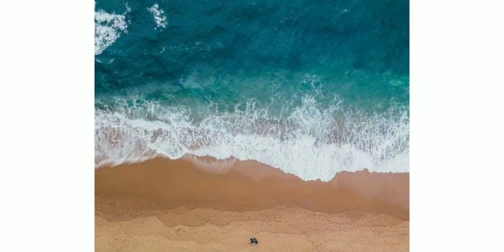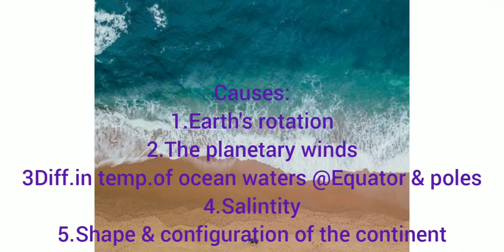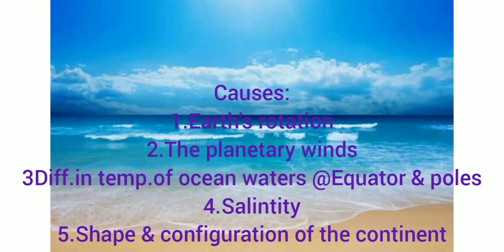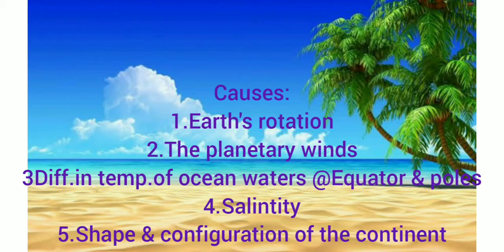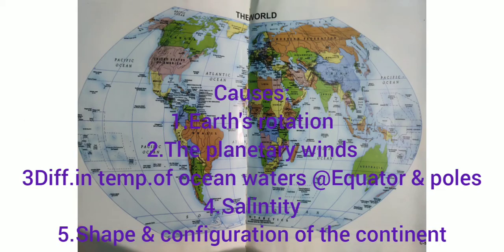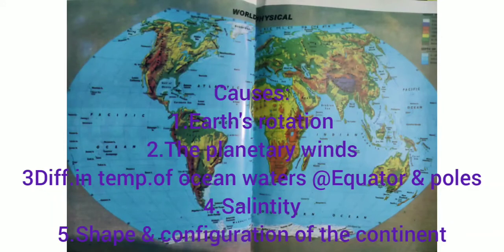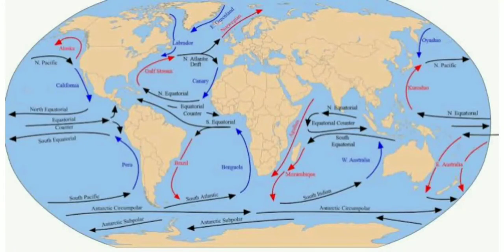What causes ocean currents? The causes include: Earth's rotation, which results in the Coriolis (deflective) force; planetary winds; differences in temperature of ocean waters between the equator and the poles; salinity of the ocean, which affects the density of water — the main cause of movement of ocean water; and the shape and configuration of the continents, which determines the direction of ocean currents.